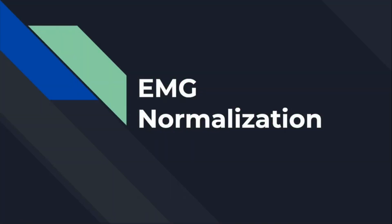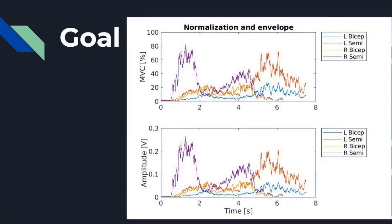Hello everyone, welcome to my YouTube channel. Today I'm going to show you how to do EMG normalization. The goal of this video is to make this plot. As you can see, the plot on top is normalized EMG data. The legend shows: blue line is left bicep femoris, the next line is left semitendinosus, yellow line is right bicep femoris, and purple is right semitendinosus. The x-axis is time in seconds.